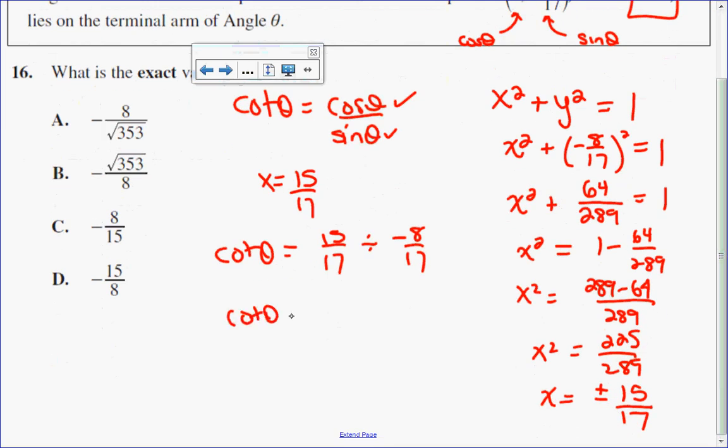To divide fractions, I keep the first one the same, change division to multiplication, and flip my second fraction. That cancels. I know that cotan is equal to negative 15 over 8. So, the answer to this question is D.